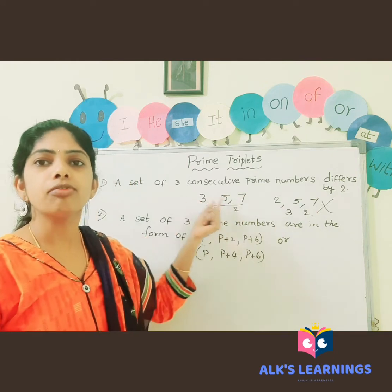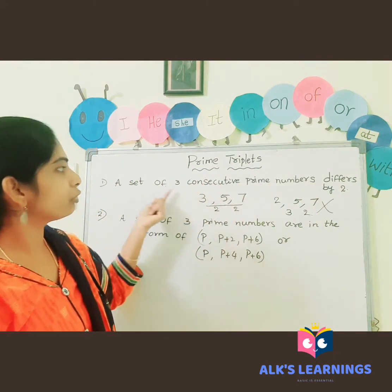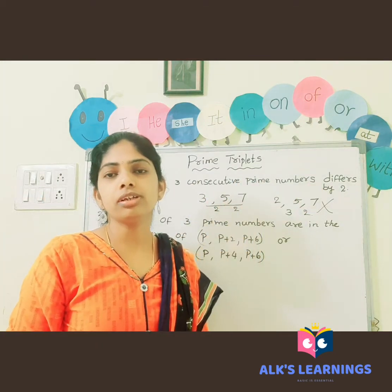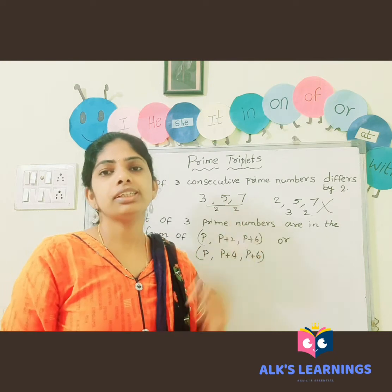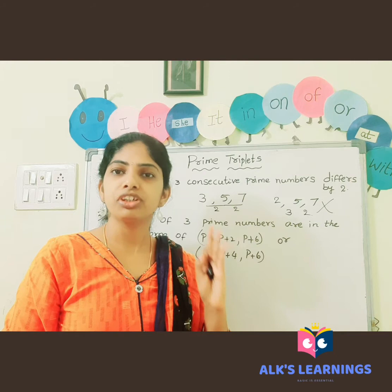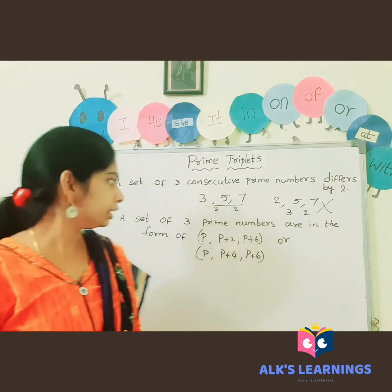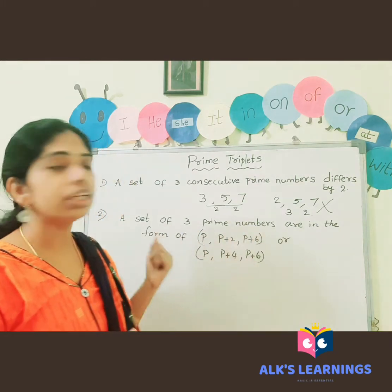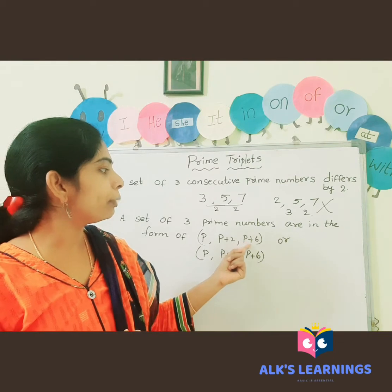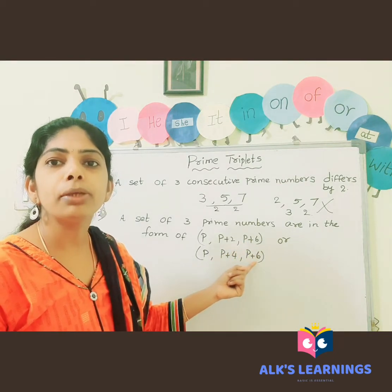So three, five, seven satisfies the condition — three consecutive prime numbers differing by two — and is called a prime triplet. Triple means three numbers. Now, one more condition: a set of three prime numbers in the form of P, P+2, P+6, or P, P+4, P+6.